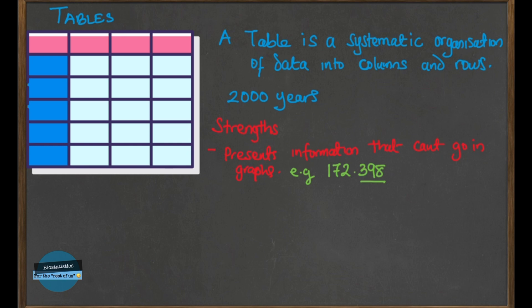Another strength of a table is that it can house different units in a single table. You can present different units together — for example, blood glucose level, respiratory rate, BMI, and hemoglobin level all in one single table. This is quite difficult to do in a chart.